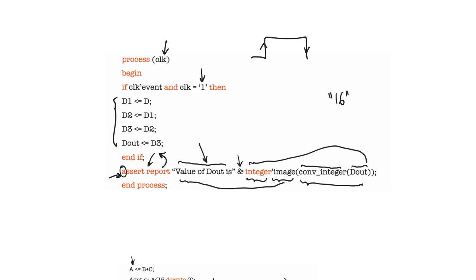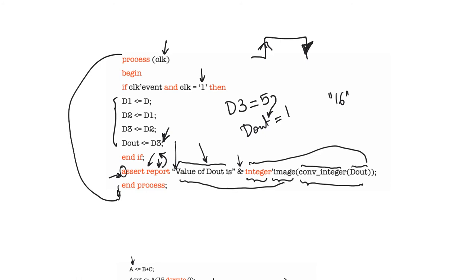It's also worth noting what value of dout will be displayed. Assume that before entering the process, d3 was equal to 5, so dout is going to take the value of d3 and be 5. The old value of dout was 1. On the positive edge, the display will still show 1 because the signal assignment is only a transaction and doesn't become an event until the end of the process. When the process is called again on the falling edge, the change becomes an event and dout is 5 — so you see the old value on the positive edge and the updated value on the negative edge.